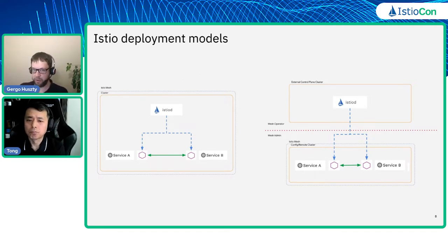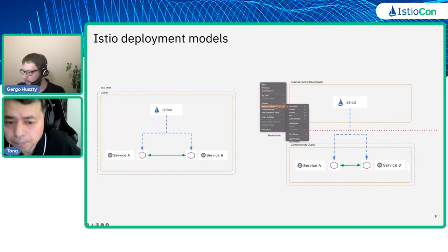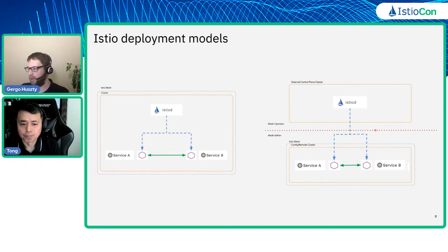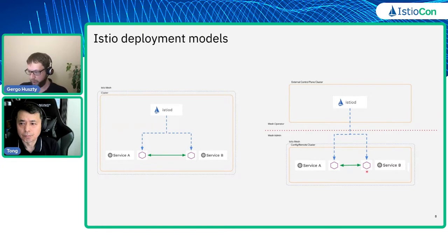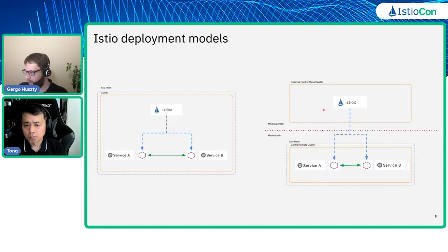Based on the comparison on the left-hand side, you can see the regular combined setup with Istiod running in the mesh cluster, while on the right-hand side it is the split control plane model where Istiod is actually running somewhere else — outside of the cluster where the user wants to have its workload. It looks like it's just about running Istiod somewhere else, so you might wonder why this is a 40-minute talk, but bear with us — a lot of challenges ahead.